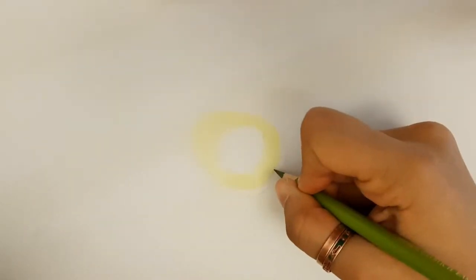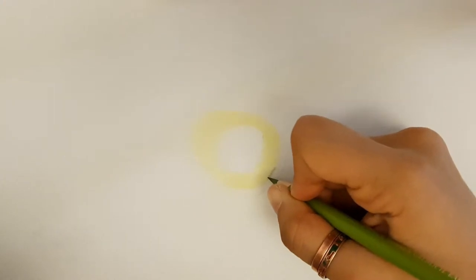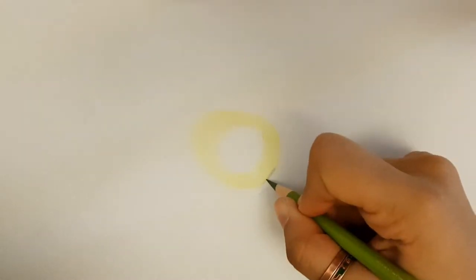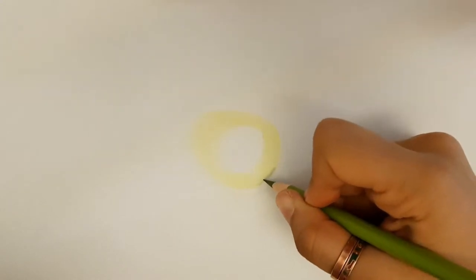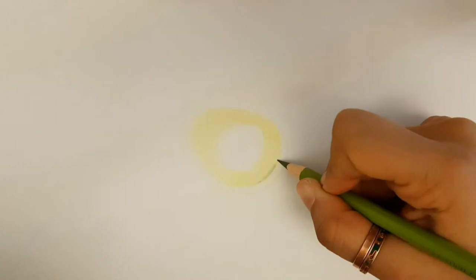When you are working with very bright colors like this exact color, it's very easy to put a lot of pressure because you think that maybe the color is not enough. But that is actually a mistake because it's going to block the paper from accepting more layers on top. So let's be smooth and put a very small layer.